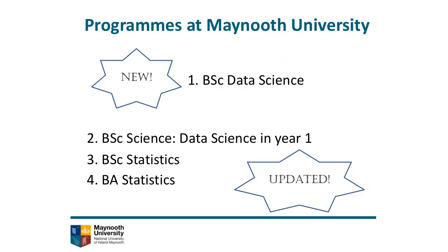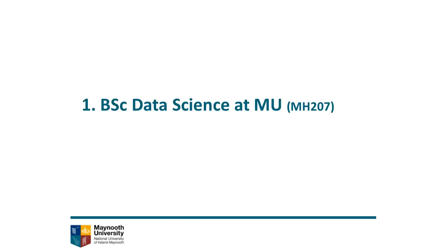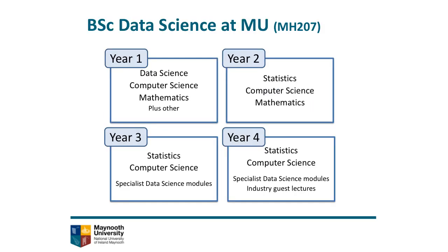So now it's time to talk about the programs here at Maynooth University, starting with our denominated entry BSc Data Science. In first year, you'll do data science, computer science, mathematics, and another subject of your choice. Then in second year, you'll drop that extra subject and proceed with stats, computer science, and maths. Finally, in years three and four, you'll carry on with statistics and computer science, but also specialist data science modules. Those are carefully put together to ensure you're a well-trained data scientist at the end of your program, and that includes industry guest lectures and also a capstone course in year four.